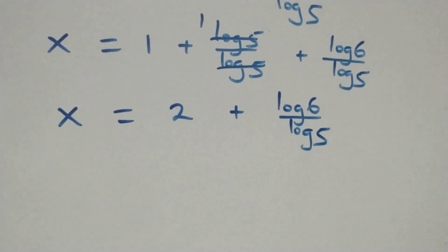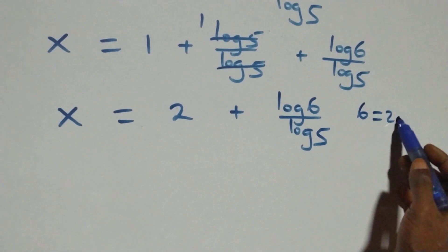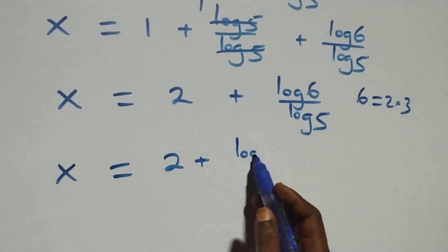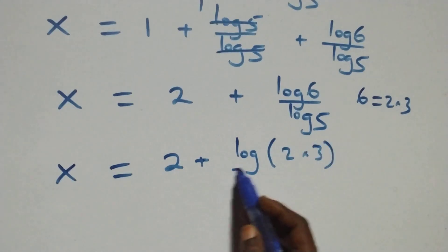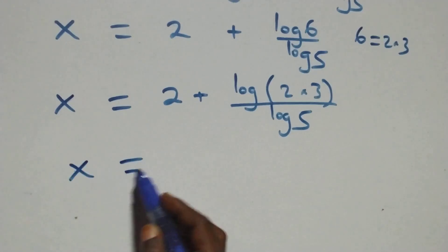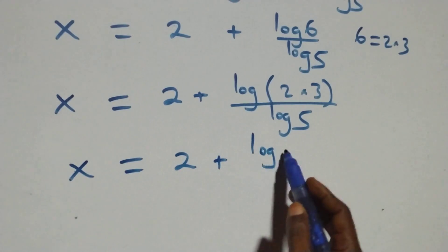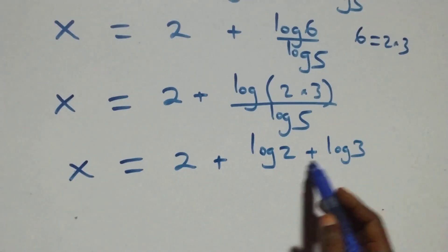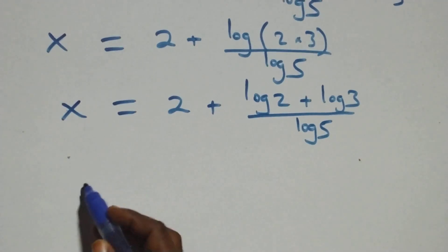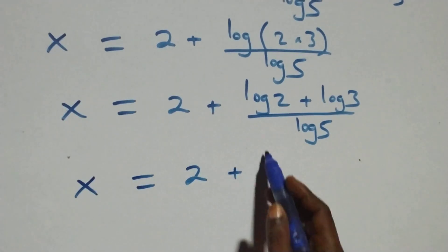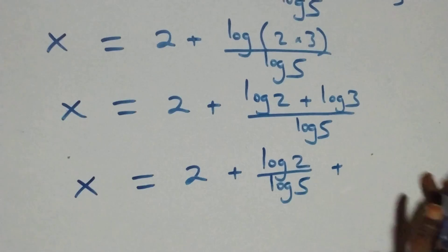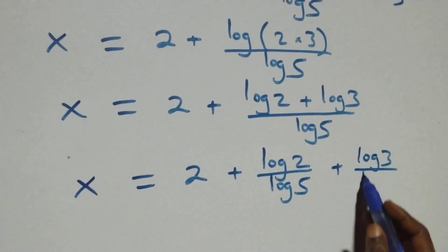We can also write 6 as 2 times 3. So x equals 2 plus log(2 times 3) over log 5. Applying the product rule again: x equals 2 plus (log 2 plus log 3) over log 5. Separating into two fractions: x equals 2 plus log 2 over log 5 plus log 3 over log 5.